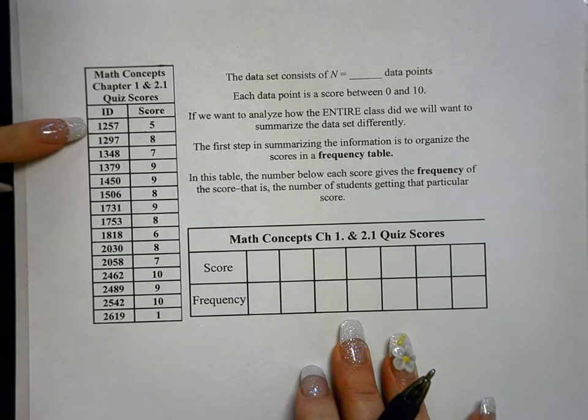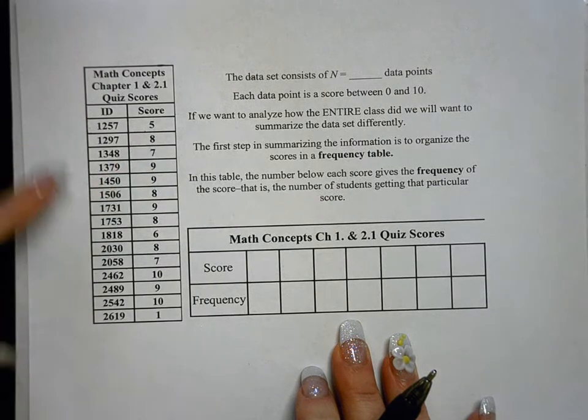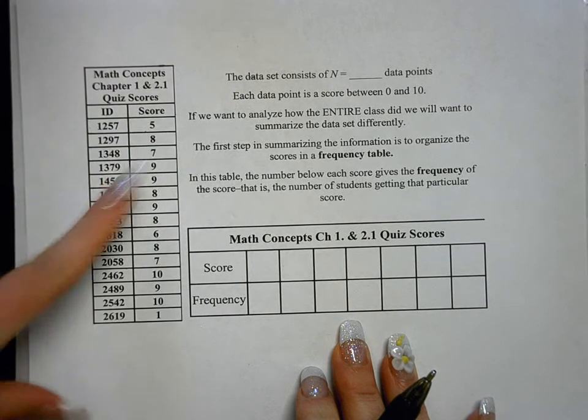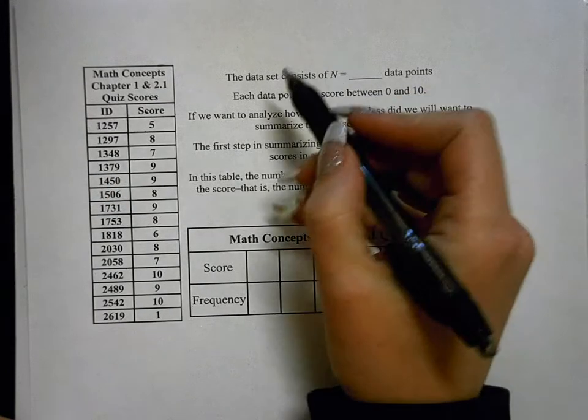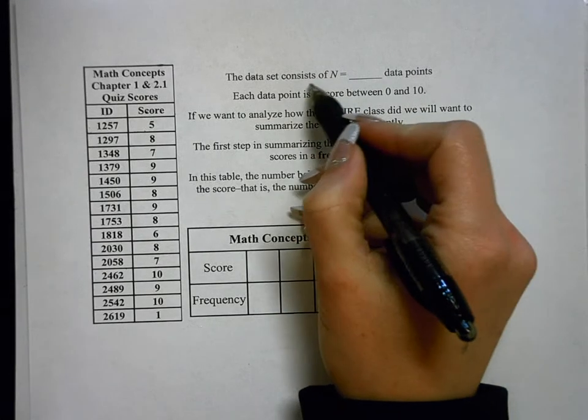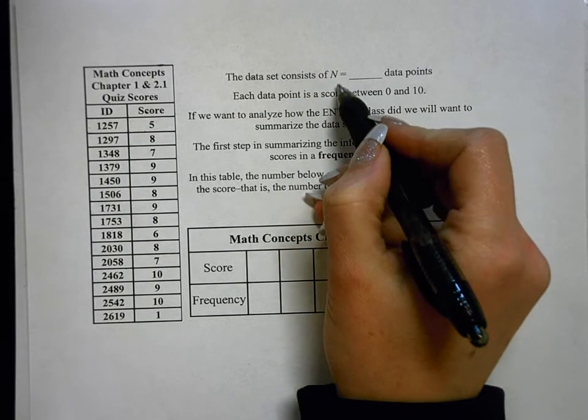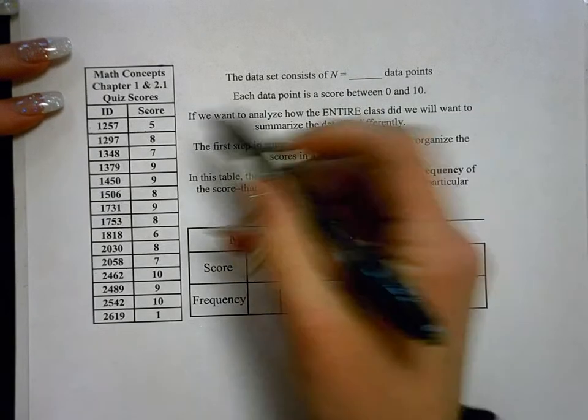Now here are all of the student ID numbers and here's their corresponding score. So this student got a score of 5, this student got a score of 8. So when we're looking at this table, the first thing that we need to figure out in the data set is this data set consists of n number of data points. So we need to figure out how many data points there are.